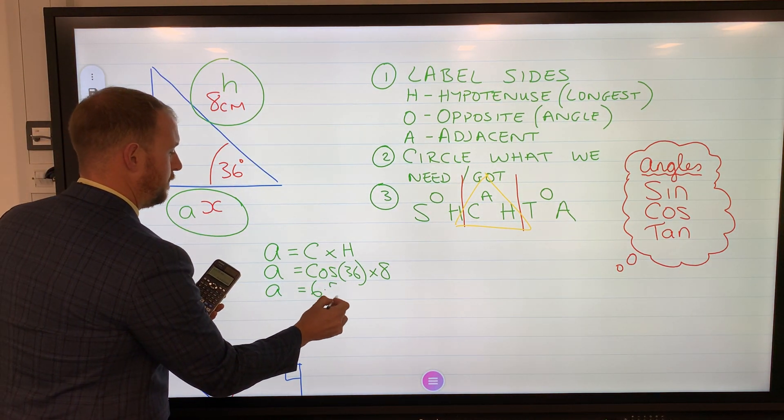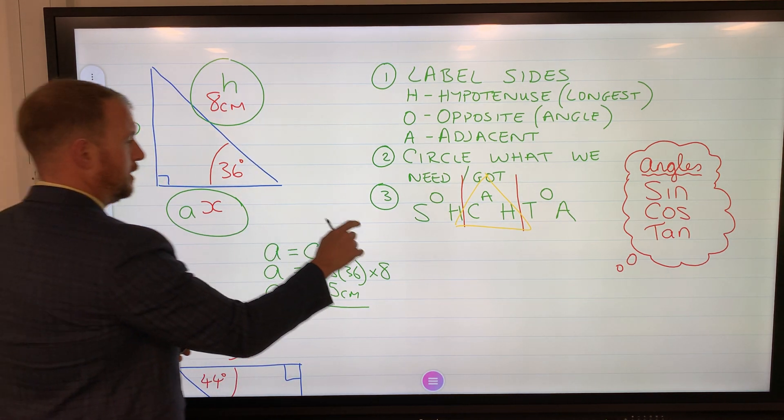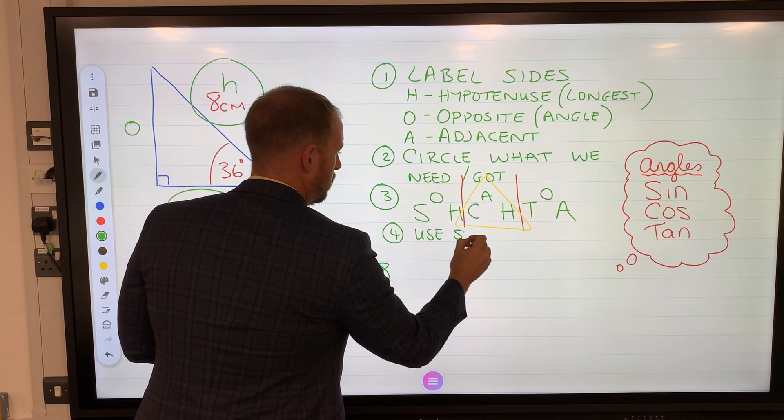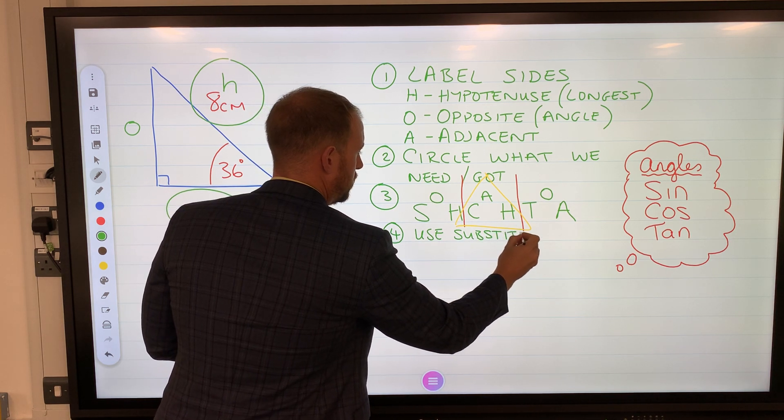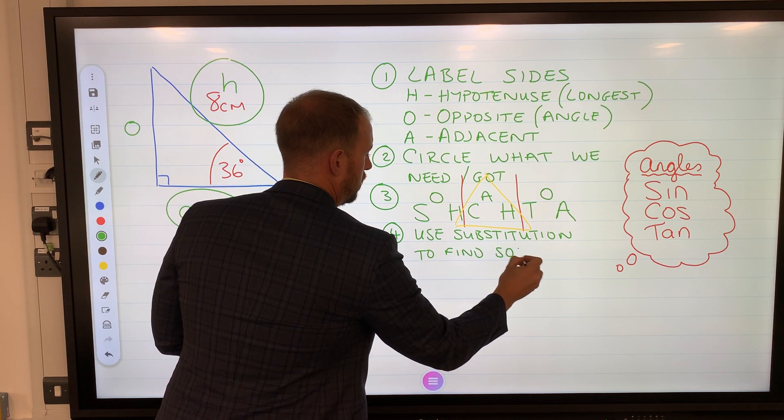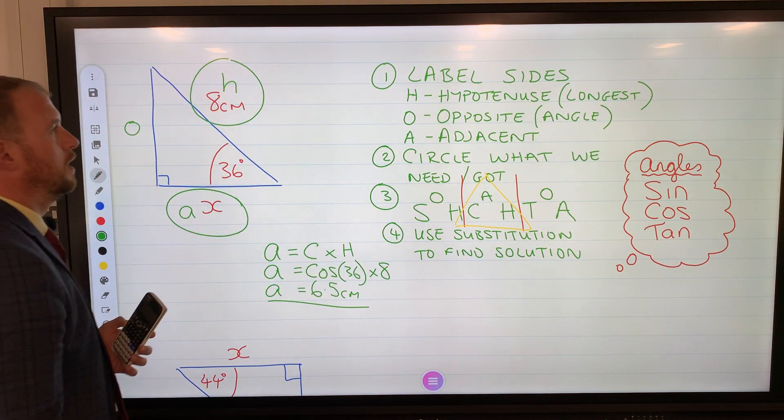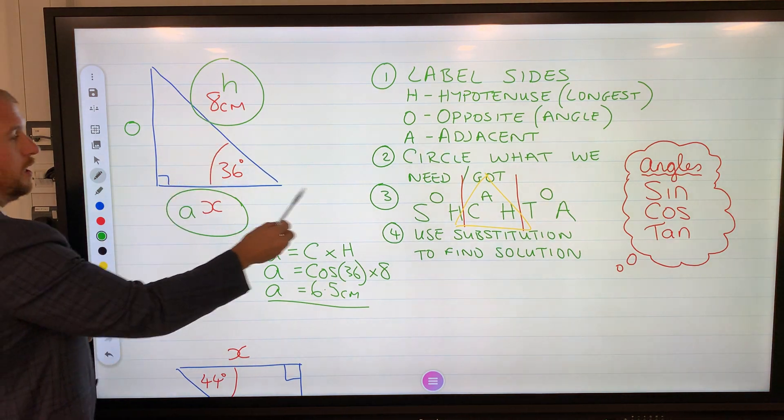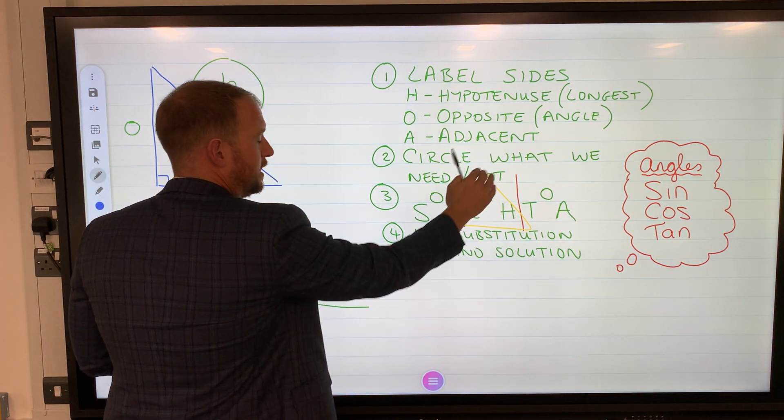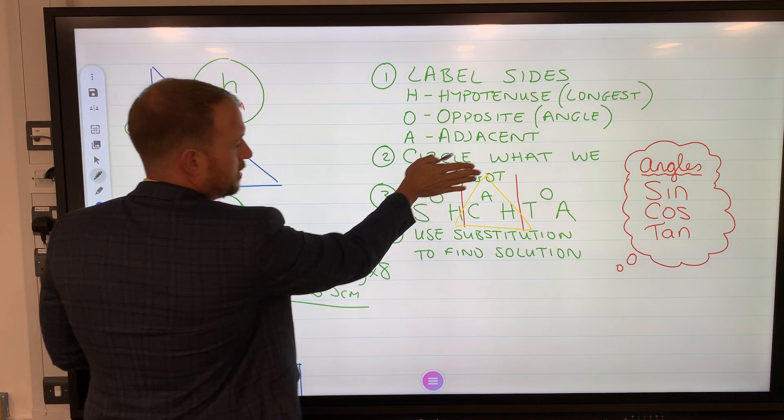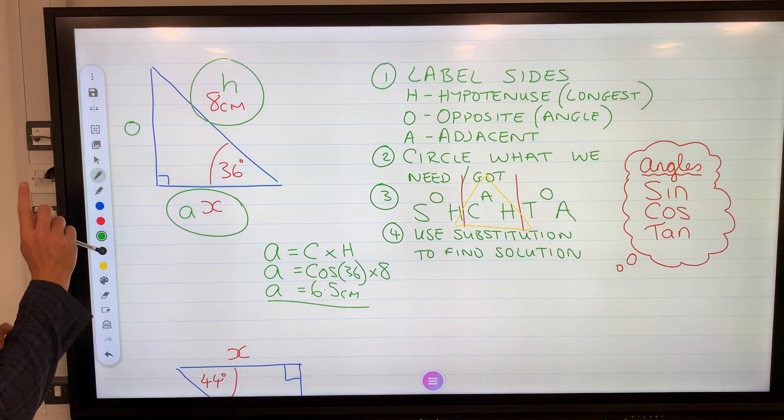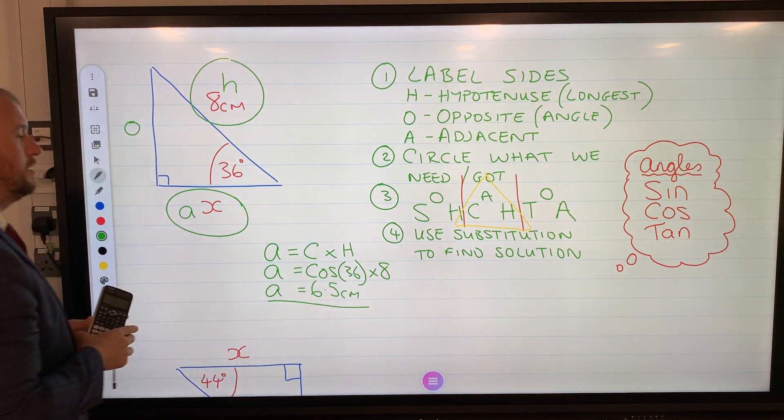So going back to my steps, we use this, so then we use substitution to find solution. Substitution. So we label the sides, circle what we need and what we've got, SOHCAHTOA, then use the triangle. If we wanted the H it'd be A over C, so A divided by C, but this time we want the adjacent so therefore it's C times H, and then use substitution to find the solution. Right, so hopefully you've jotted that down and now we're going to follow these four steps to answer a few more questions.